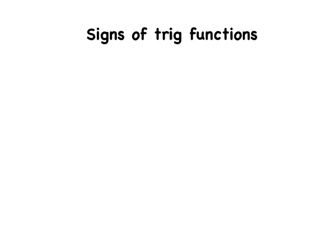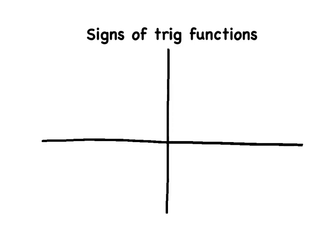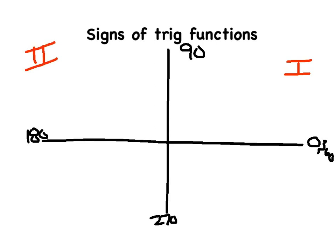We're going to go ahead and sketch out our four quadrants and label them 0, 90, 180, 270, and back to 360. Let's go ahead and label the quadrants as well. We start in that upper right quadrant as 1, go counterclockwise, giving us quadrant 2, quadrant 3, and lastly quadrant 4.